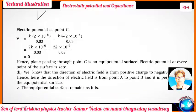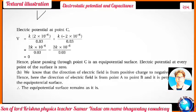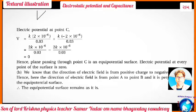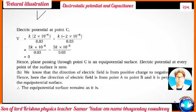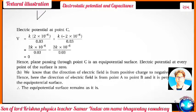For part B: The direction of the electric field is from positive charge to negative charge, so here the direction is from point A to point B. It is perpendicular to the equipotential surface, and the equipotential surface remains unchanged.